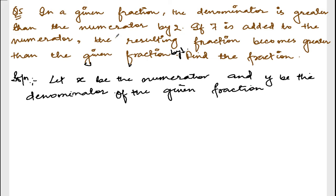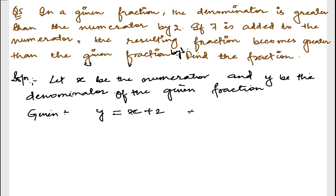The denominator is greater than the numerator by 2. So what is given: y is greater than x by 2, so y is equal to x plus 2. You can transfer that side, or just keep it like that. This is equation number 1.